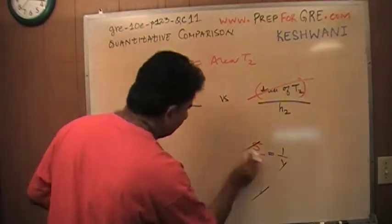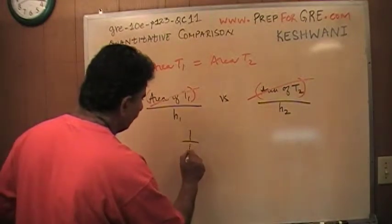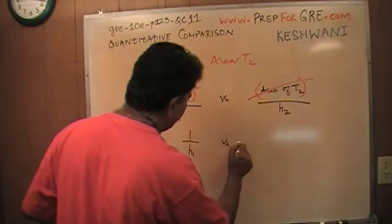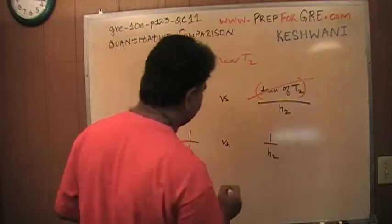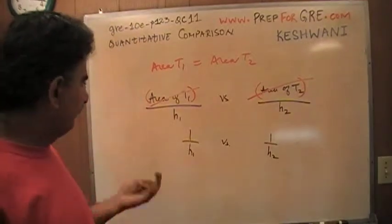Let me erase all of this. So all we are asked to compare is 1 over h1 versus 1 over h2. Which quantity is bigger? How the hell do I know? You can't tell.